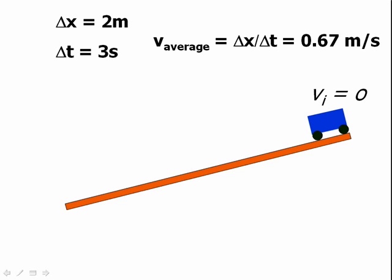Suppose that this ramp is 2 meters long, and that it takes 3 seconds for the cart to get to the bottom of the ramp. If I divide 2 meters by 3 seconds, I get a velocity, 0.67 meters per second.